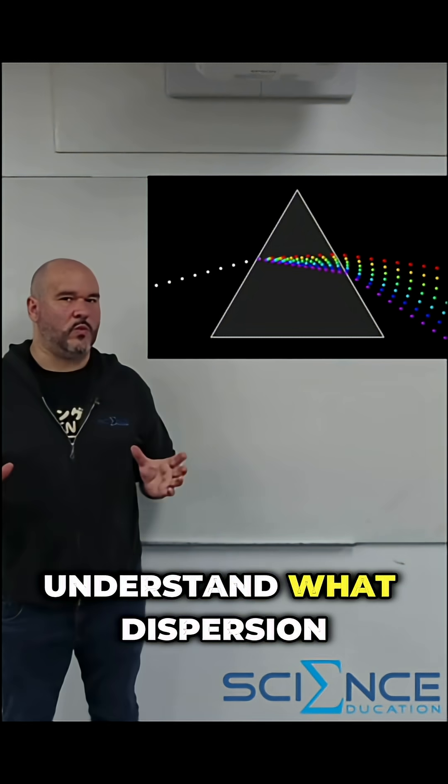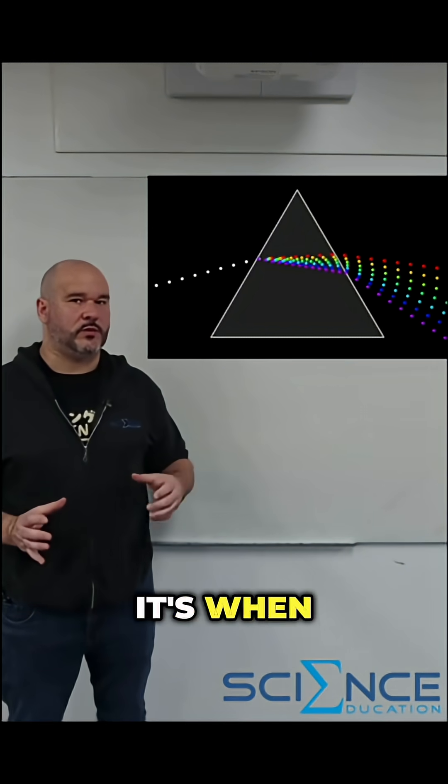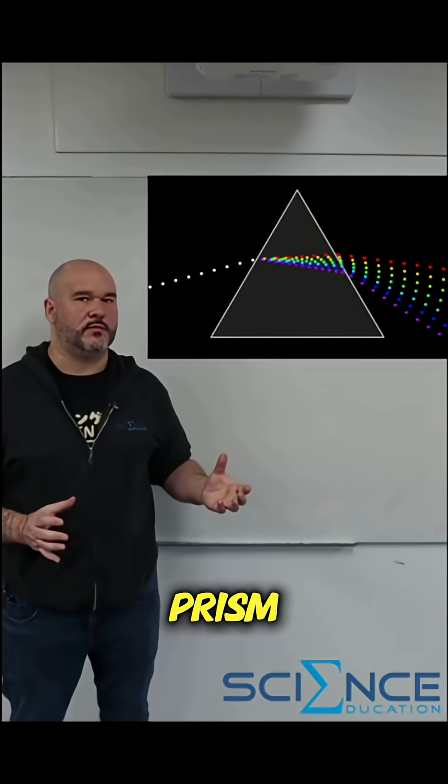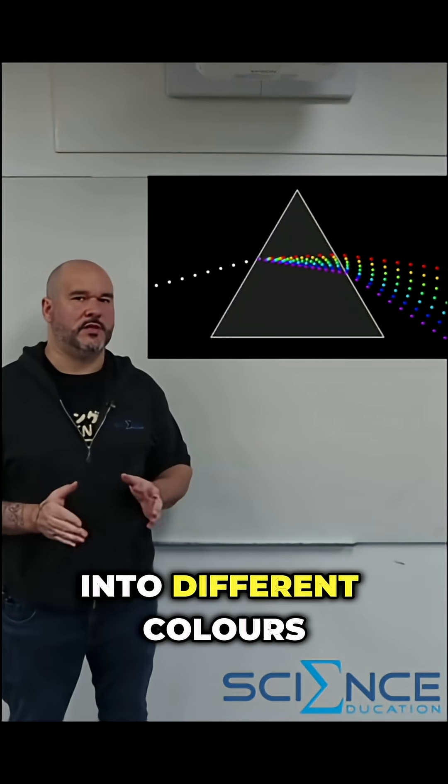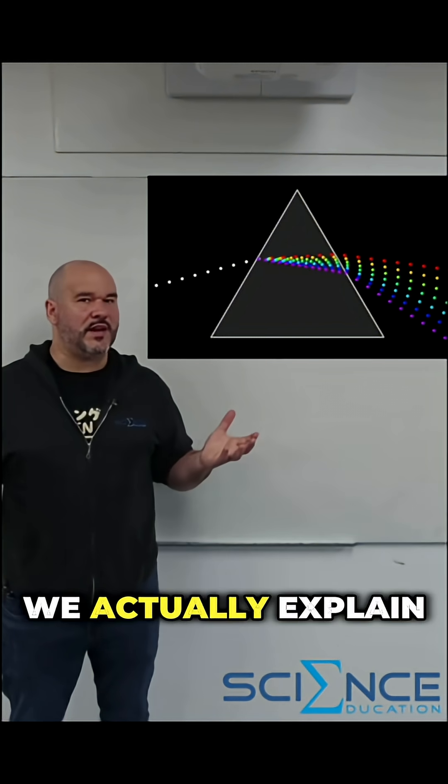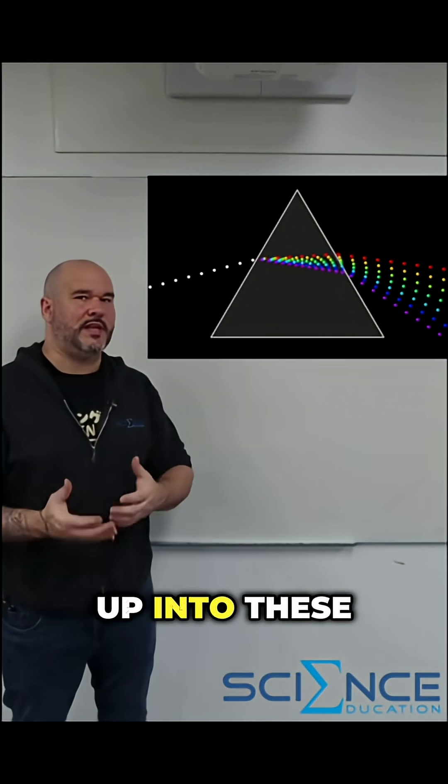Firstly we need to understand what dispersion actually is. We basically say it's when white light shines into a prism and the white light breaks up into different colors. So how do we actually explain how it breaks up into these different colors?